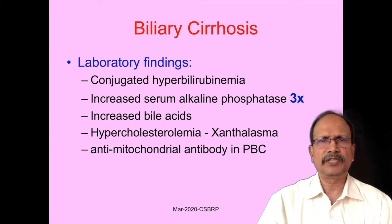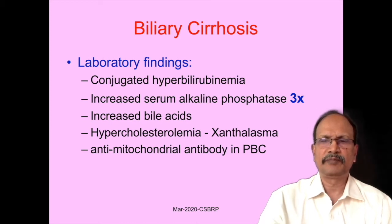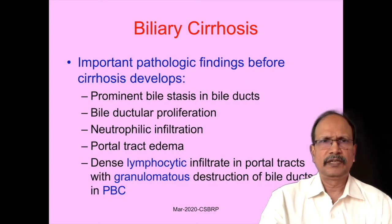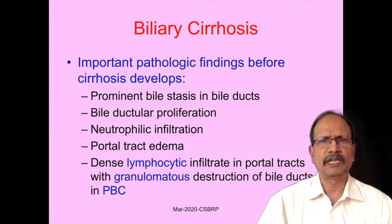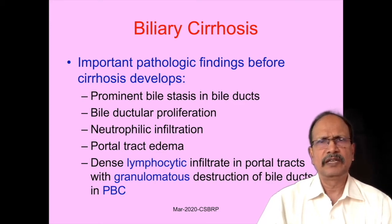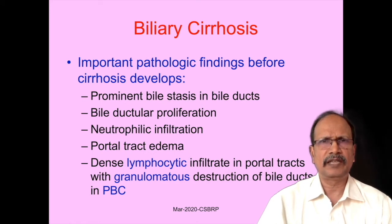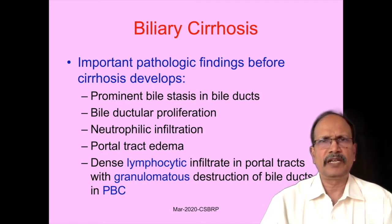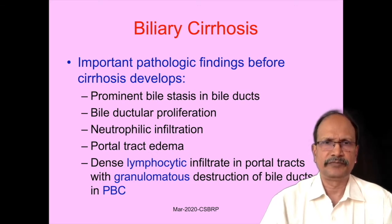You may demonstrate antimitochondrial antibodies in primary biliary cirrhosis. Important pathological findings before cirrhosis develops: prominent bile stasis in bile ducts and bile ductular proliferation. If you recollect the histology of classical cirrhosis, there is fibrosis which runs across the liver and which is broad in nature, and there may be bile ducts but not very prominent. Whereas in the case of biliary cirrhosis, bile duct proliferation occurs.